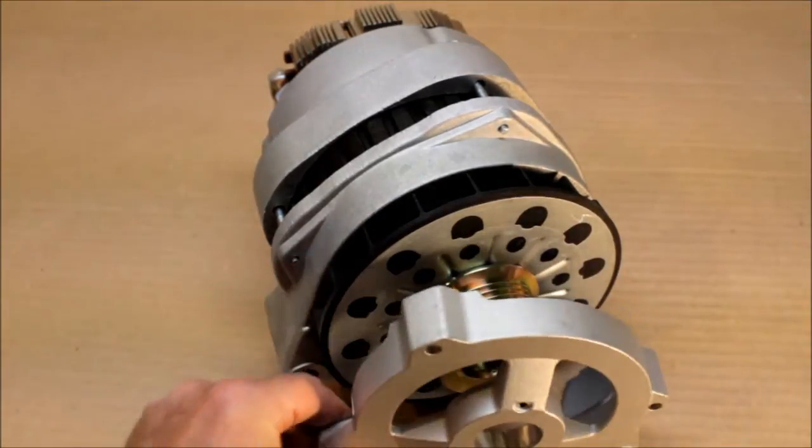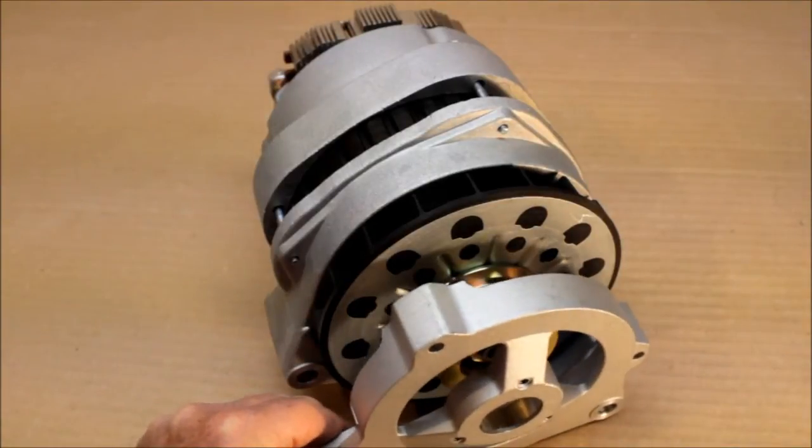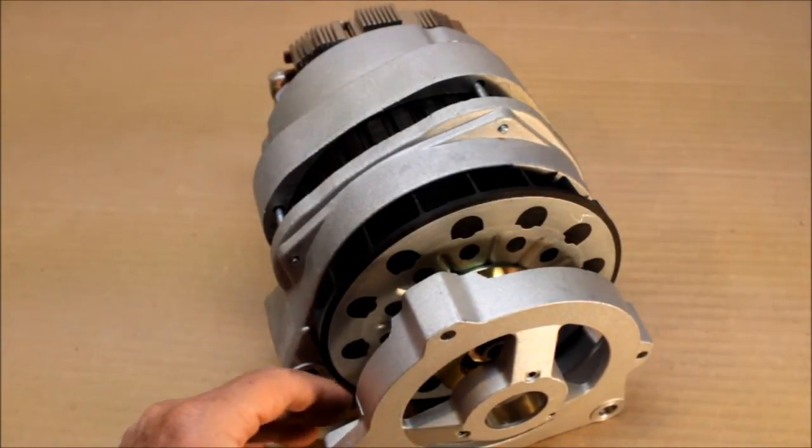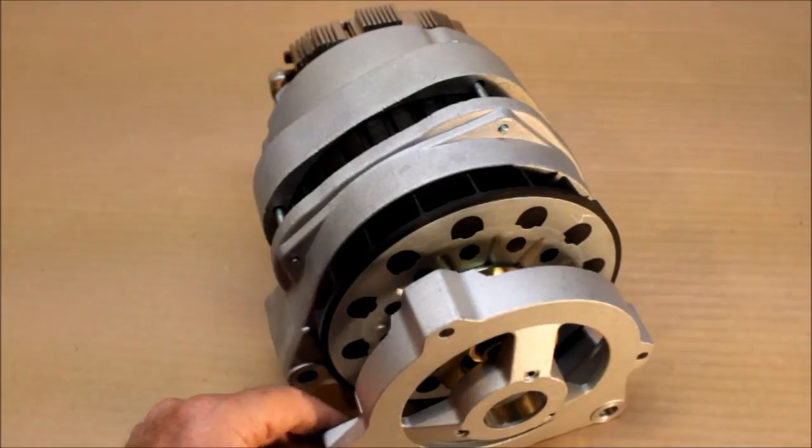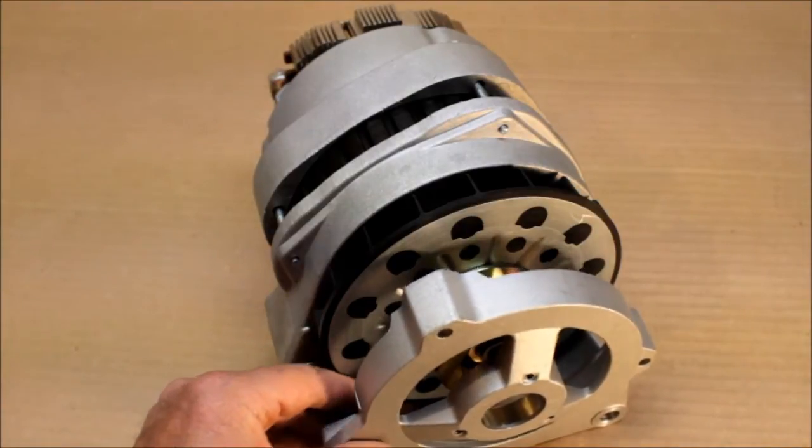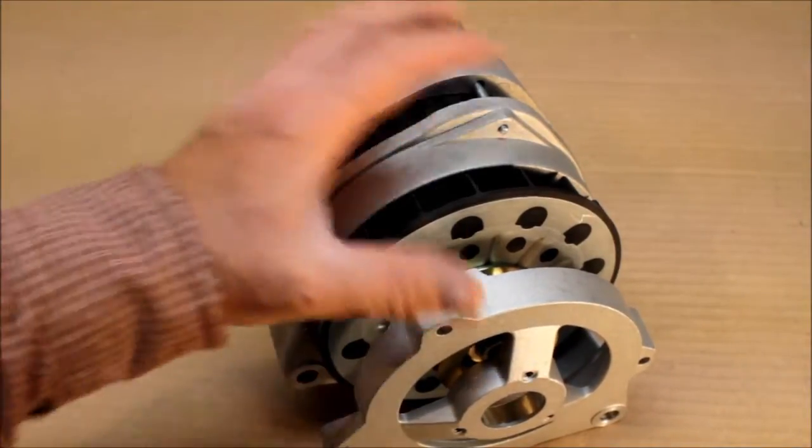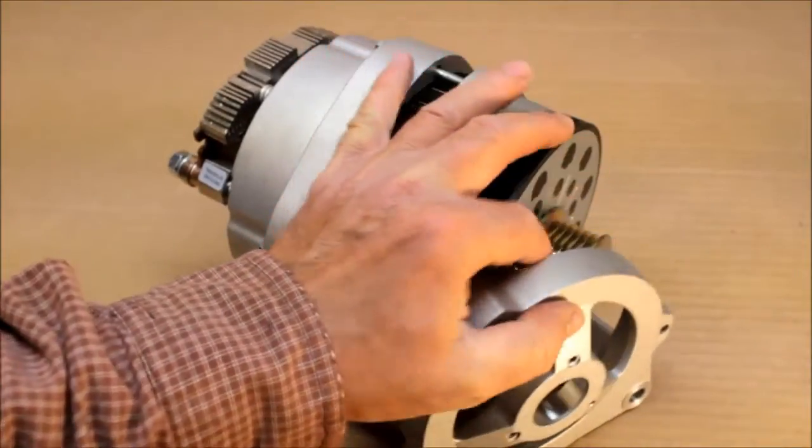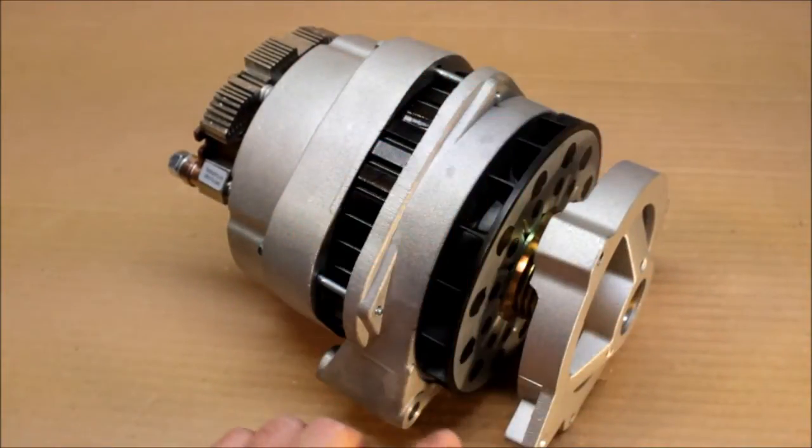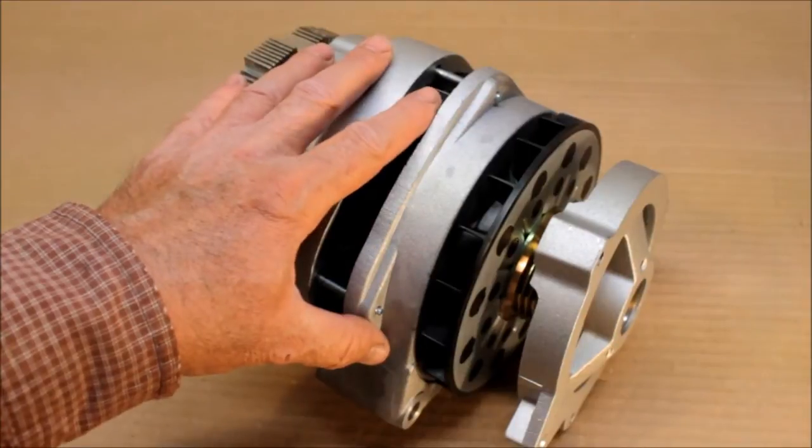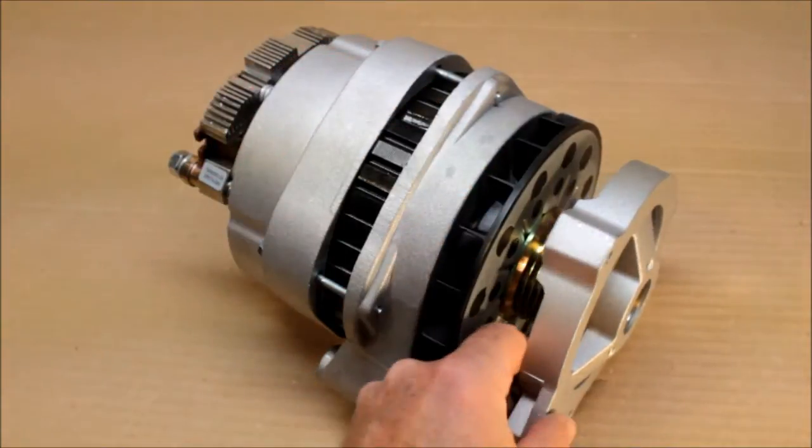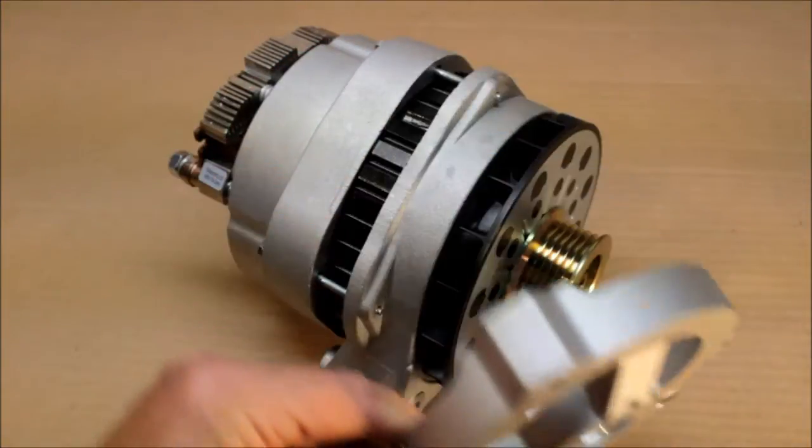Look at how small the 105 amp CS 130 is compared to this much larger CS 144. This CS 144 can bolt right directly in place of this mounting style small 105 amp CS 130. So that's another thing to consider with this mounting, what we call the 612 mount.